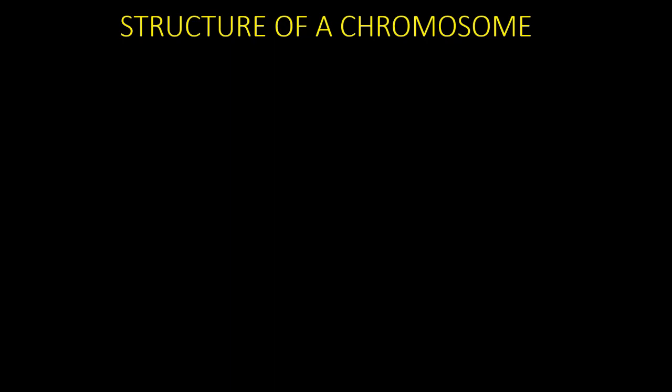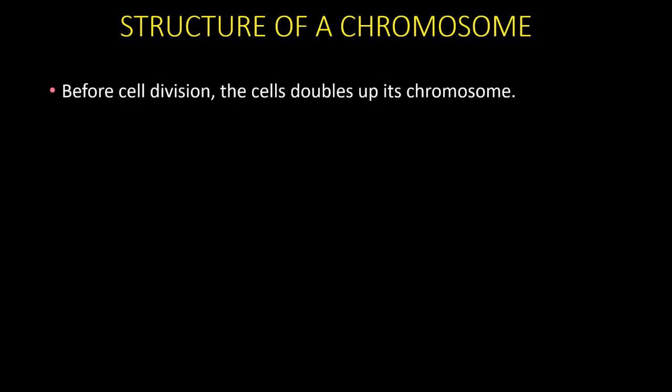We will also see the structure of a chromosome. Before division, a cell has to do many things — it has to double up its chromosomes, otherwise it is not possible to divide into two. It will double up every content so it can be comfortably shared between the dividing cells. For example, if the chromosome number is 2N, it will become 4N so that 4N is divided among two cells as 2N and 2N.